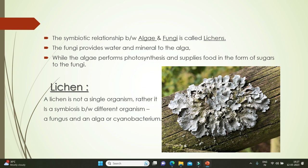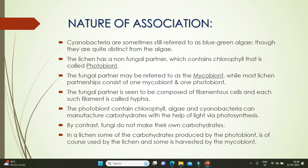Coming to the main topic: the symbiotic relationship between algae and fungi is called lichens. The fungi provide water and minerals to the alga, while the algae perform photosynthesis and supply food in the form of sugars to the fungi. A lichen is not a single organism; rather, it is a symbiosis between different organisms — a fungus and an alga or cyanobacterium.